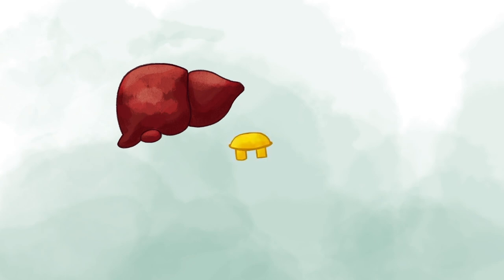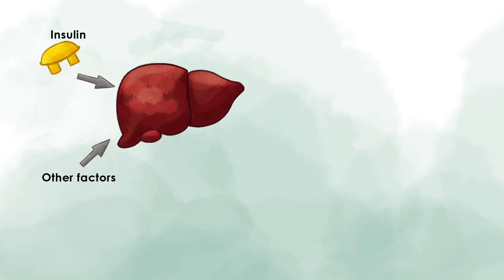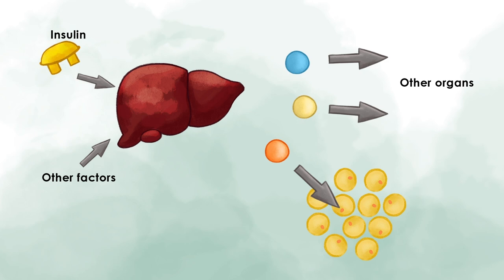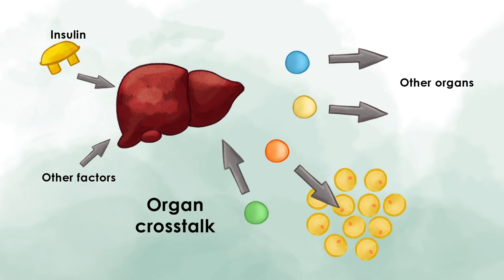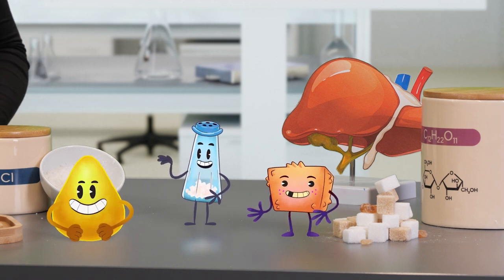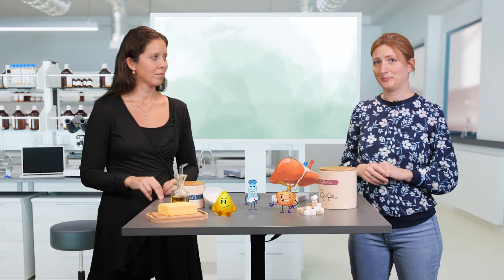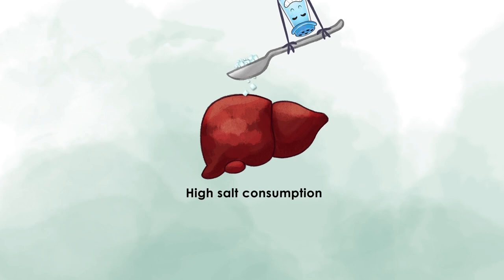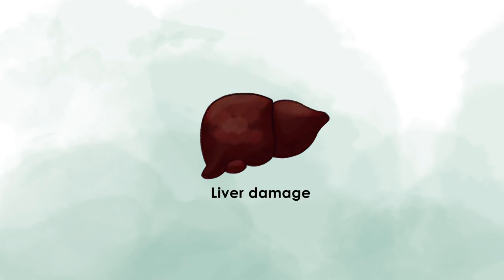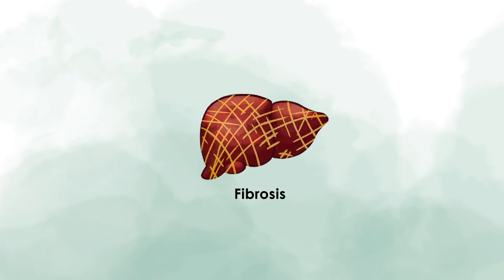The liver metabolism is not only affected by insulin, but also by other factors. The liver itself produces factors that influence the whole body, and it receives signals from other organs like adipose tissue. This is called organ crosstalk, and it is essentially central to energy metabolism. Organ crosstalk also helps us understand why the metabolic syndrome affects the whole body. Some publications suggest that high salt consumption, which is often the case in our western diet, also damages liver cells, increases liver fibrosis, and contributes to the development of the metabolic syndrome.